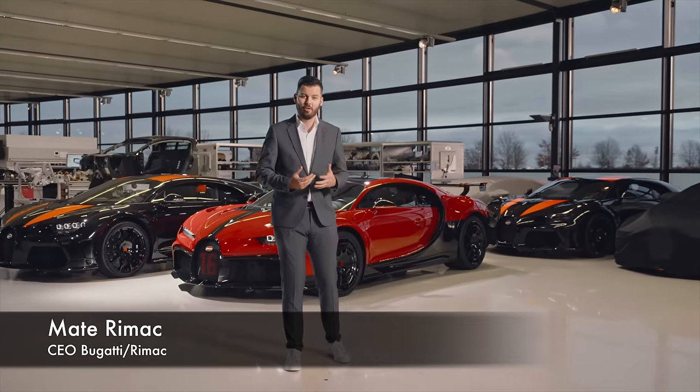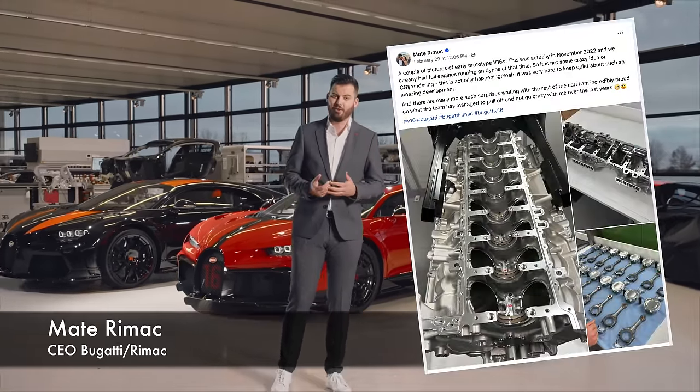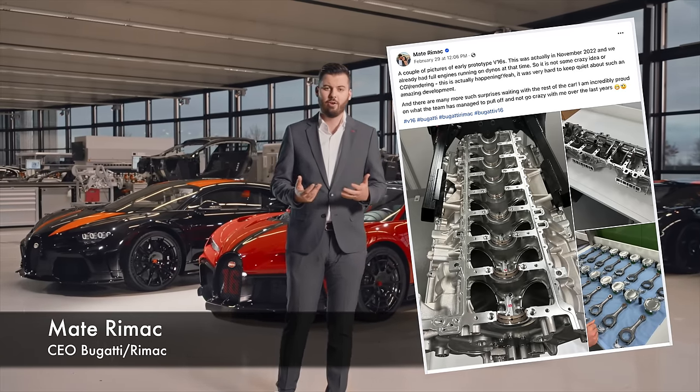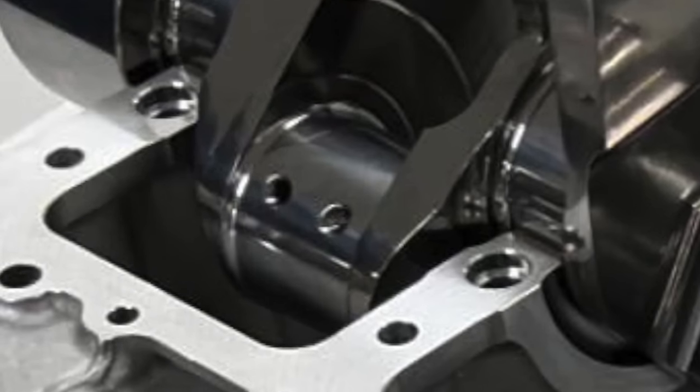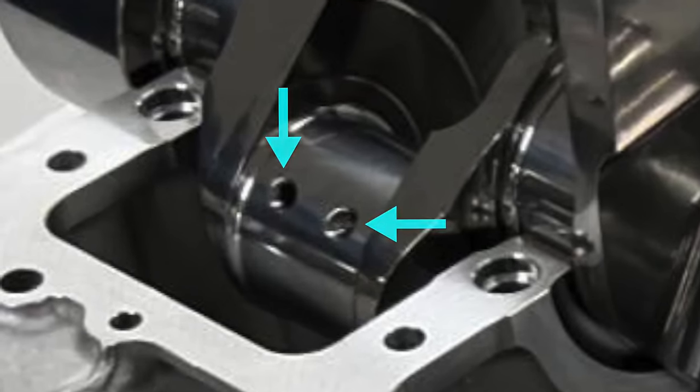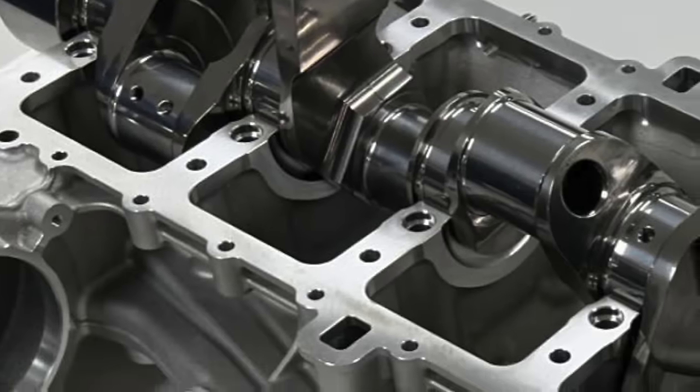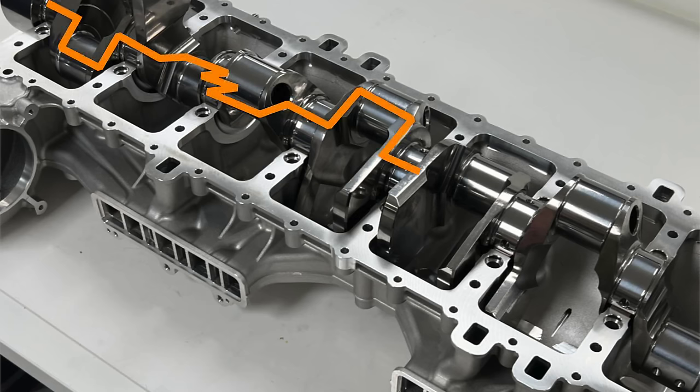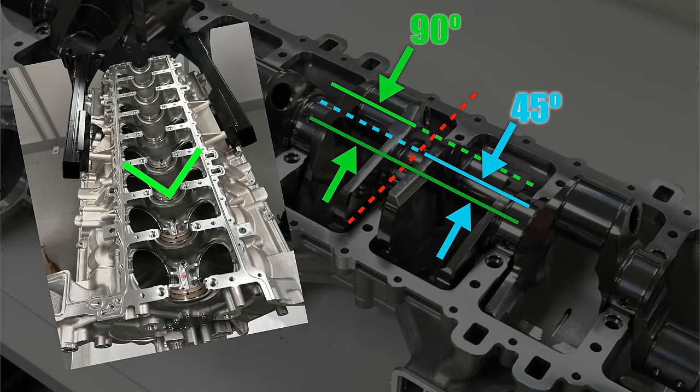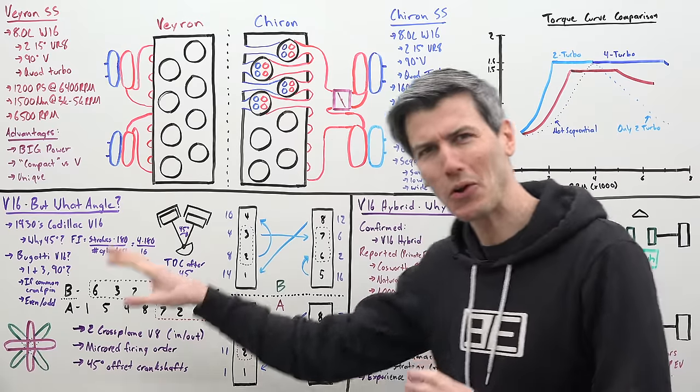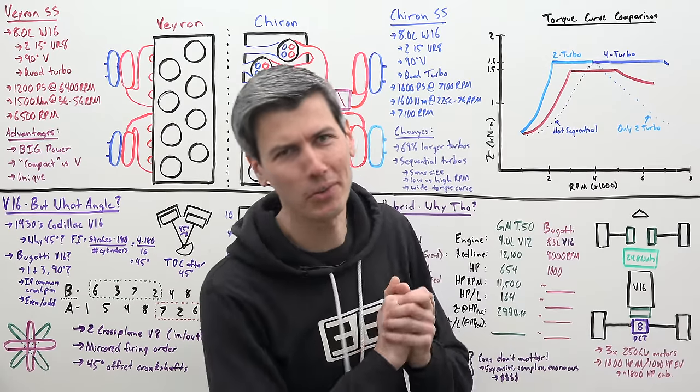All right, time to come clean. Mate Rimac, the CEO of Bugatti, actually posted some photos of a prototype engine on Facebook. We have a few images we can analyze. First, we can see the crankshaft and since two cylinders share a common crank pin, we can confirm based on the firing order that it is a 90 degree V8 and you can see it's clearly a cross plane crankshaft which halfway through has a 45 degree offset creating the two V8s which alternate power strokes every 45 degrees of crank rotation. And there's a photo of the engine block where you can eyeball 90 degrees pretty easily.